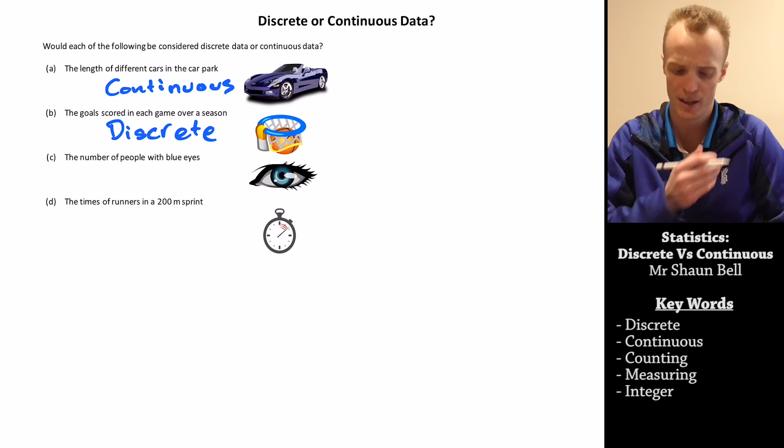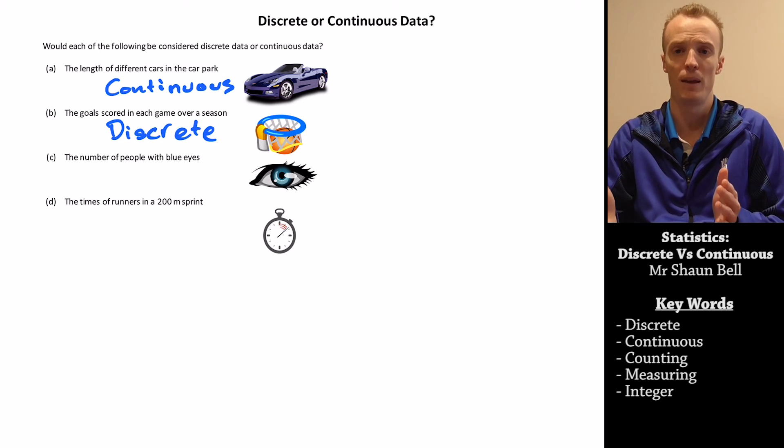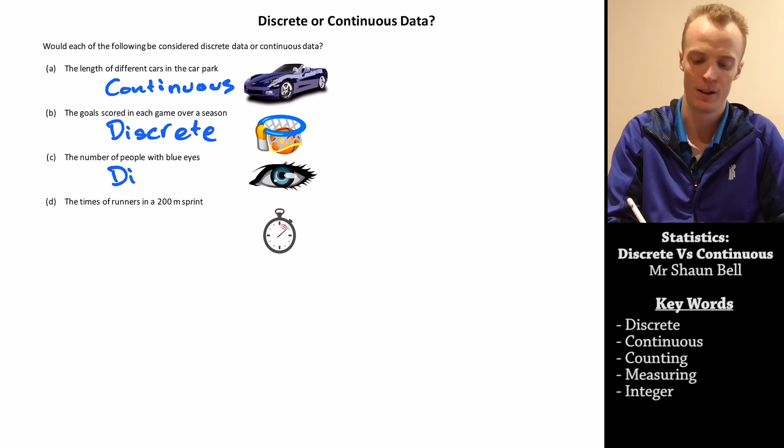Okay, so how about C, the number of people with blue eyes. Now once again, that would be counting the number of people, it would be on those integers. So we'd call this discrete data.